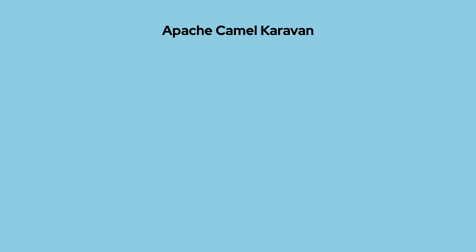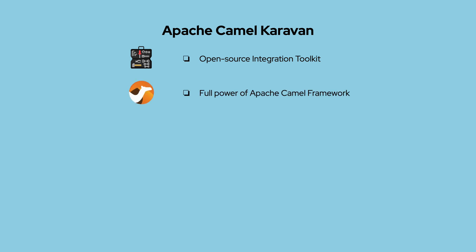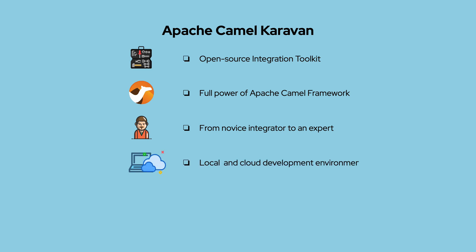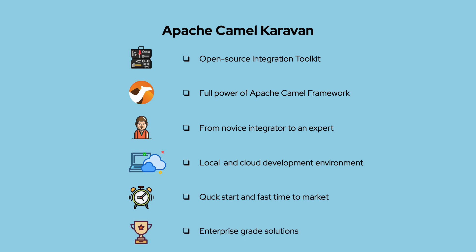So, to sum up, Apache Camel Caravan is an open-source integration toolkit that gives the full power of the Apache Camel framework to any developer — beginner or experienced — in a local development environment or in the cloud, to rapidly build reliable enterprise-grade integration solutions.